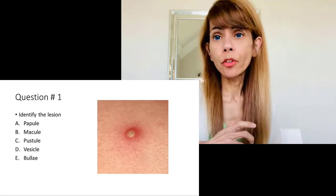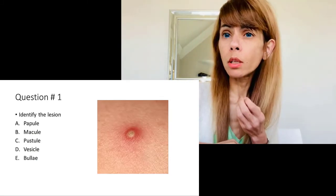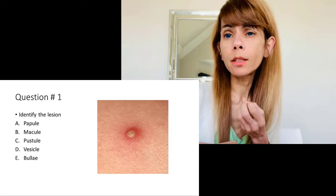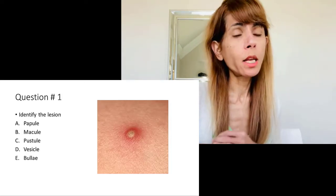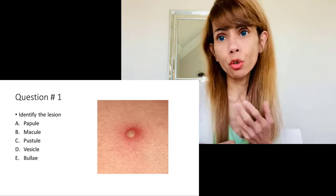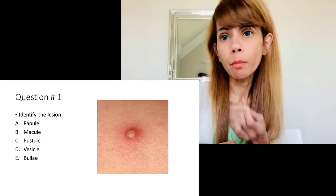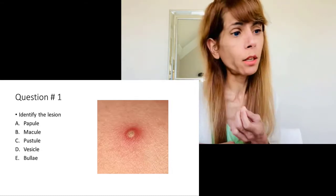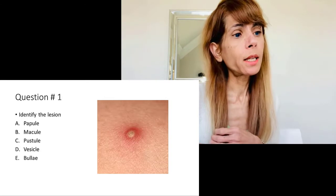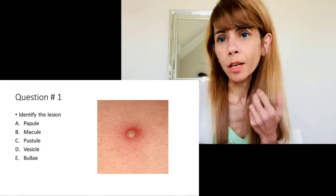Question number one is about identifying this lesion. It is a small, bumpy lesion on the skin. The correct answer is pustule because it is raised and filled with pus. It is not a papule because it contains something. It's not a vesicle because there is pus in it. It's not a macule because it's not flat, and it's not a bulla because it's not very big.